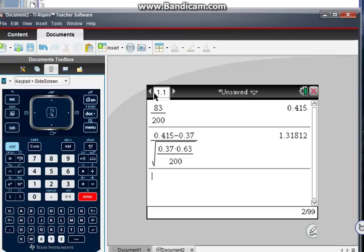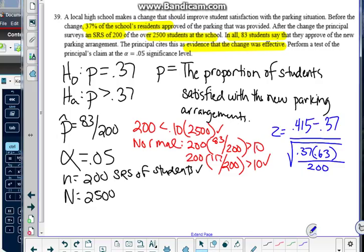Okay. Punch that into my calculator. 0.415 minus 0.37 divided by the standard deviation gives me 1.318. We'll round that to 1.32. So that's my Z score.